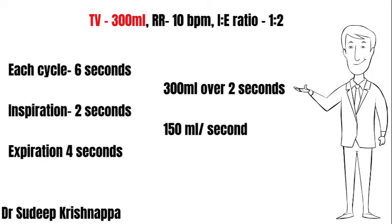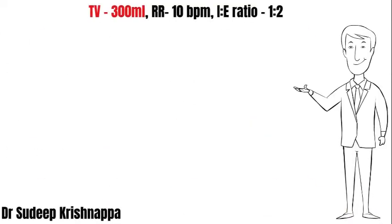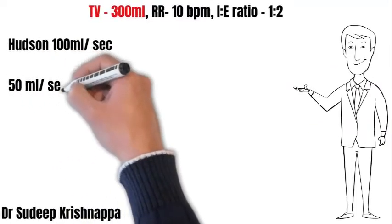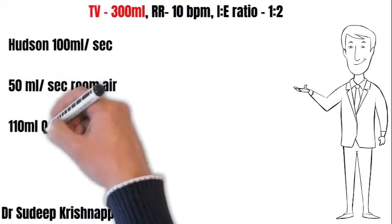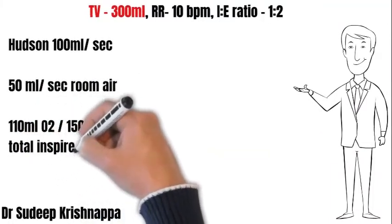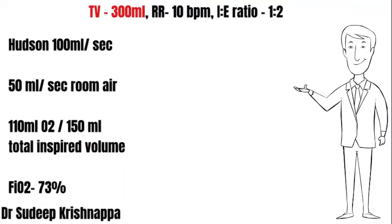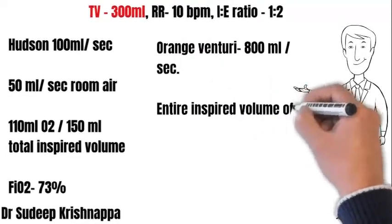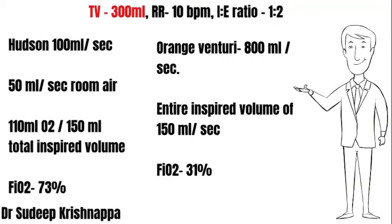How do the Venturi and Hudson's face mask behave in this new scenario? Hudson's mask provides 100 mL per second; the required flow rate is only 150 mL per second. The remaining 50 mL has to be room air, containing 10 mL of oxygen. This gives a total of 110 mL of oxygen in the 150 mL inspired each second, translating to an FiO2 of around 73%. The orange Venturi, generating 800 mL per second, meets the entire inspired volume, so the FiO2 remains at 31%.